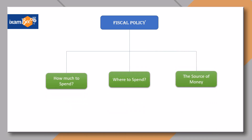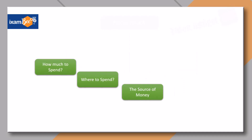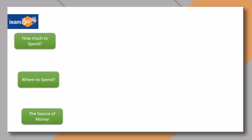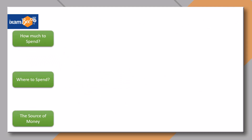Please note that all this information is provided through the annual statement of the government, or what we call the Union Budget. Let us now briefly discuss each component. The expenditure statement of the Union Budget talks about the figures of expenditure.